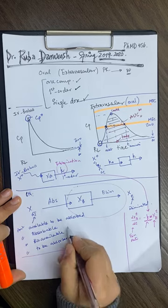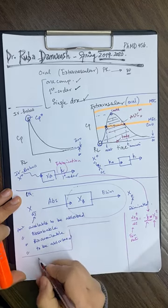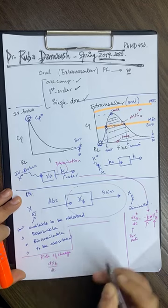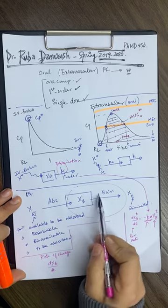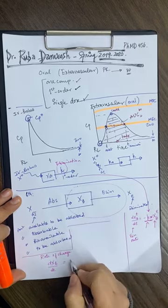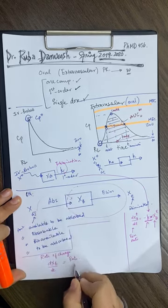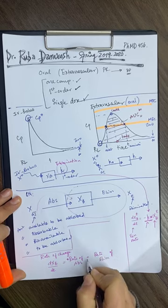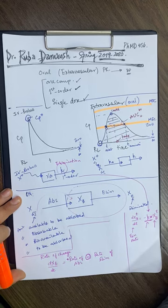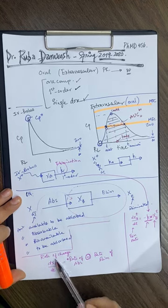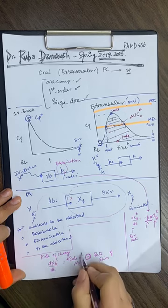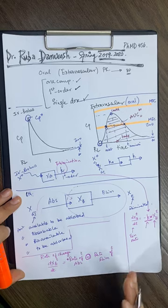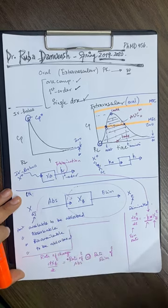Now, writing the general differential equation for extravascular: the rate of change in amount per unit time, dX_p/dt, is no longer called only elimination rate because I have both processes. It equals the rate of absorption — positive because it's increasing — minus the rate of elimination, negative because it's decreasing. So the general differential equation is: dX_p/dt = rate of absorption at time t minus rate of elimination at time t. This is true regardless of whether we have first order or zero order kinetics.